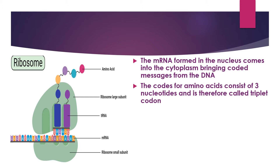Examples of triplet codons are G-U-G, C-A-C, and A-A-U — these are codes for amino acids. Each group of three nucleotides coming out as per the messages of the DNA is called a triplet codon.